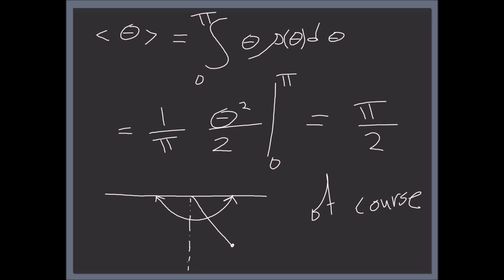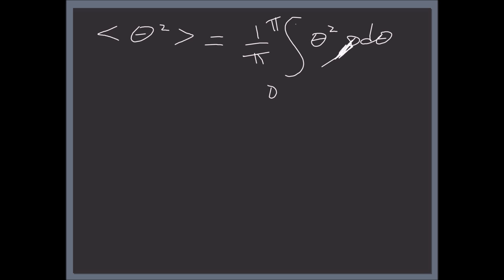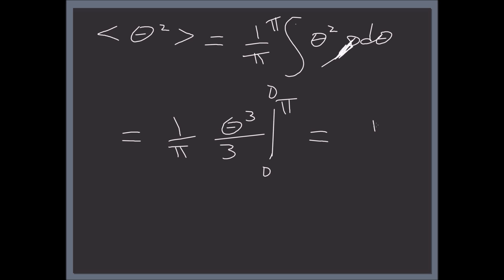Now let's find the expectation value of θ². This is just straightforward math, though a bit harder to imagine intuitively. We integrate from 0 to π: (1/π) · θ² dθ. Doing this integral, we get (1/π) · θ³/3, evaluated from 0 to π, and this gives π²/3.